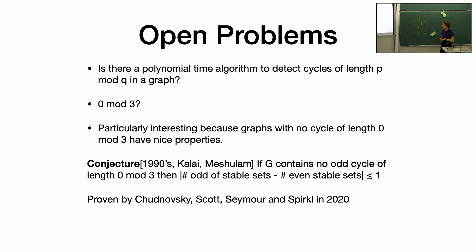Related open problems: the big one is, for which values of P and Q is it polynomial time to detect whether a graph contains a hole of length P mod Q? Paul and I tried to think about zero mod three for a little bit but didn't really get anywhere. One of the reasons we like zero mod three is because of this nice property — something like Mihail's conjecture that the number of odd sets and the number of even sets differ by at most one. Also if you have a triangle-free graph, that's a nice structural condition we hoped to use to determine whether there are any cycles of length zero mod three.